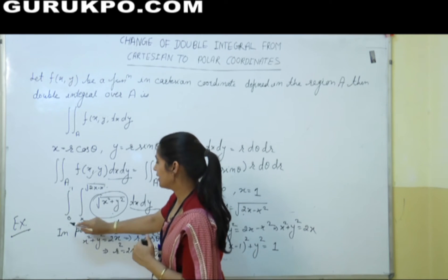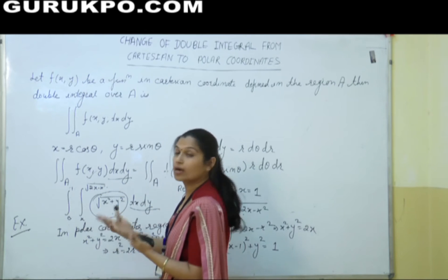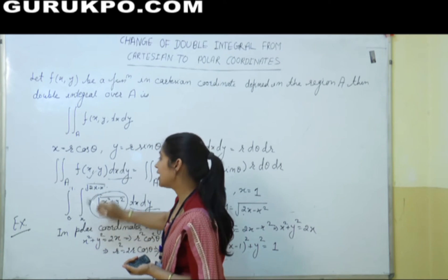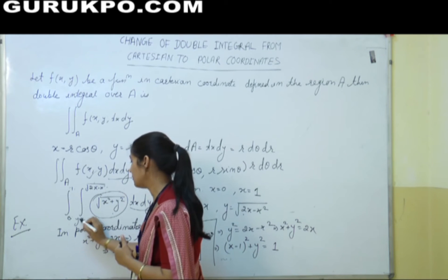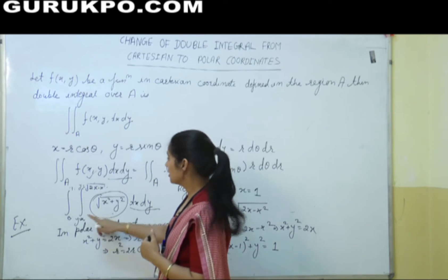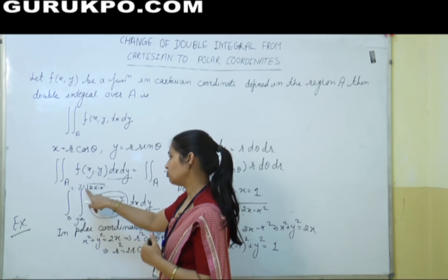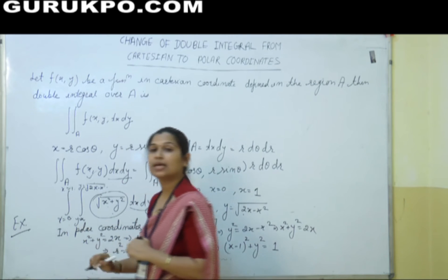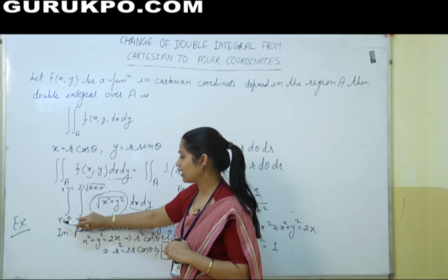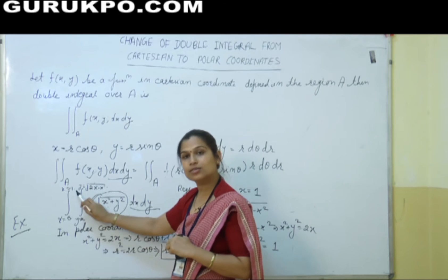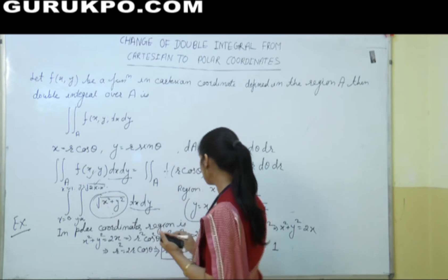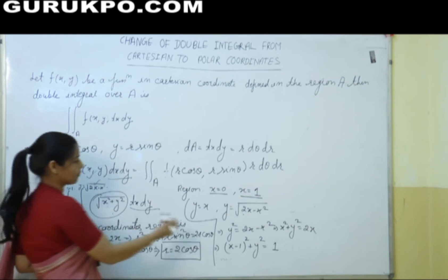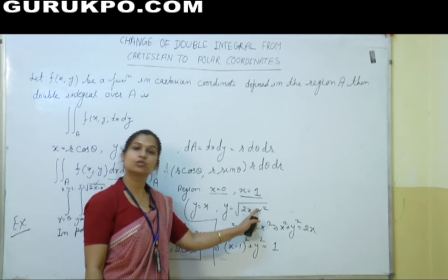Now, there is no indication given of what 0 to 1 is for — x or y. We know that if the limits are given in terms of x, then these are limits of y. That means limits from y = x to y = root(2x − x²) are limits of y, and 0 to 1 are limits of x. So x goes from 0 to 1, and y values are variable while x values are constants.